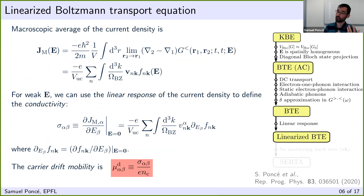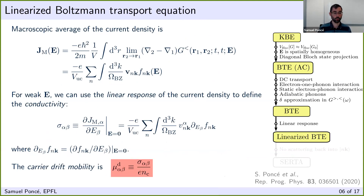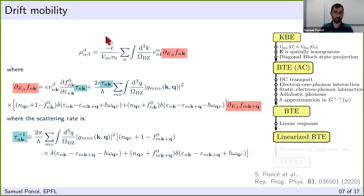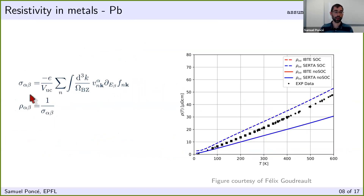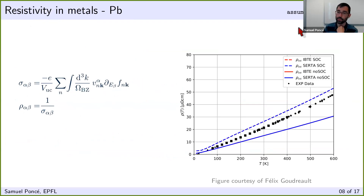That covers the first way to compute resistivity of lead. The second way uses the Boltzmann transport equation — we'll compute the conductivity using the Boltzmann equation, and then take the inverse to get resistivity. If you set assume_metal = true in EPW, the code gives you not only the conductivity but also the resistivity in a separate output file.